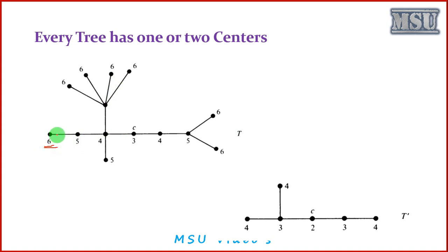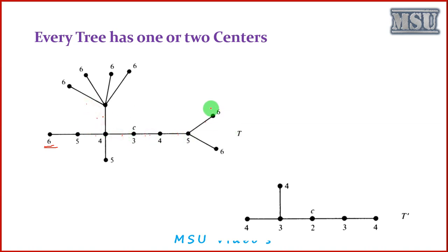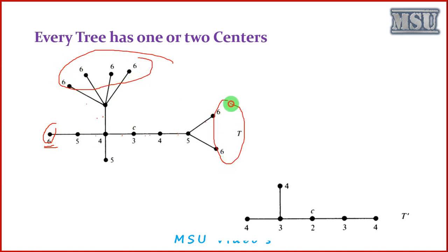For one vertex the eccentricity value is six, and for another vertex it is also six. For another vertex it is five, and along another path it is also five. Now what we are going to do is remove all the pendant vertices from the graph. These are all pendant vertices — removing them all from this configuration, we now have a reduced graph.